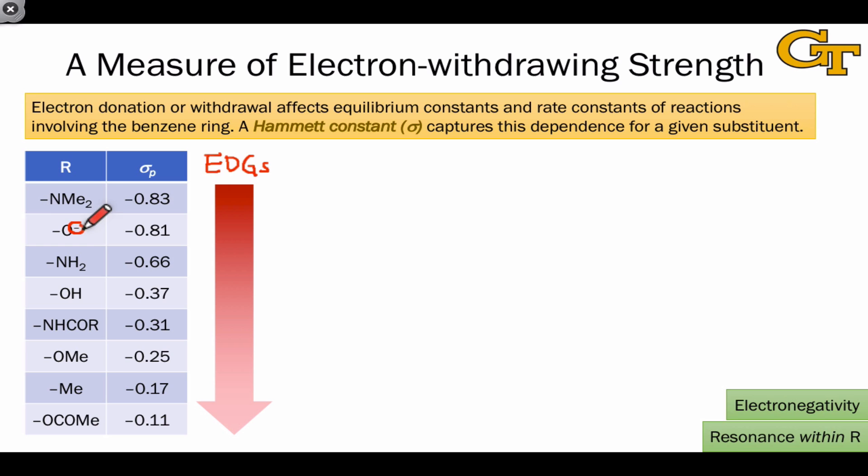As the electronegativity of the atom connected to benzene increases, the electron-donating power tends to decrease, with neutral oxygen being considerably lower than neutral nitrogen in general on this scale. An interesting exception is this group here, which is the Hammett functional group.